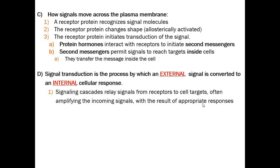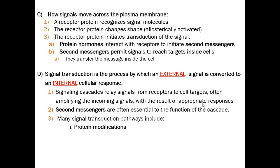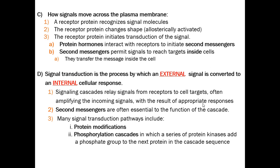Sometimes we amplify the signal — making it louder or stronger — and that triggers a specific response inside the cell. The second messenger is essential to the function of the cascade. Many signal transduction pathways include modifying proteins and changing the structure of enzymes. Phosphorylation cascades involve a bunch of proteins adding phosphate to different compounds, which triggers the next enzyme to work, which then phosphorylates the next enzyme. Phosphorylation cascades are kind of like baton relays in a track race: one runner has the baton and passes it to the next person, who immediately starts to run. The baton is like the phosphate group — each time you pass that phosphate to the next protein, it triggers a reaction, just like it triggers the person to run.